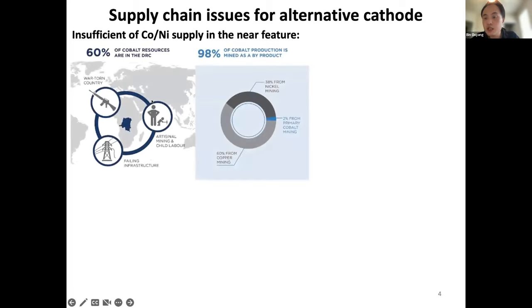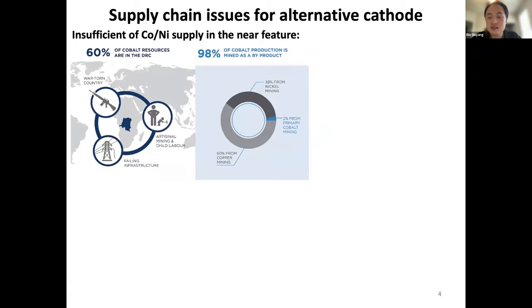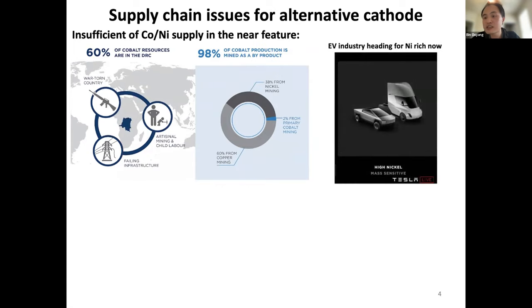This raises huge supply chain issues. If you pay attention to critical materials, people are always nervous about running out of cobalt and nickel supply, particularly given more and more electric vehicles. About 60% of cobalt comes from one single country in Africa — the Democratic Republic of Congo — and there are all sorts of issues with mining cobalt. Also, 98% of cobalt production is a byproduct of other minerals. If we really replace all gasoline vehicles, cobalt will very soon become insufficient, which is why Tesla is moving from cobalt-based to nickel-based battery materials.